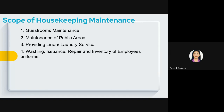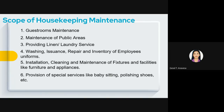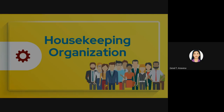The fourth scope involves washing employee uniforms and tracking uniform issues through inventory. Fifth is installing, cleaning, and maintaining fixtures and facilities like furniture and appliances. Lastly, the sixth scope is the provision of special services like babysitting, policy issues, and so on.